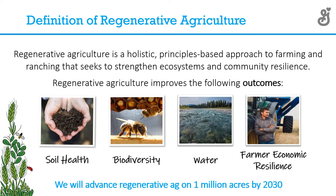General Mills defines regenerative ag as a holistic, principles-based approach to farming and ranching that seeks to strengthen ecosystems and community resilience. We take an outcomes-based definition — as opposed to one based on practices — that seeks improvements in soil health, biodiversity, water, and farmer economic resilience. In order to accelerate this farmer-led movement, we've made a commitment to advance regenerative ag on 1 million acres by 2030.